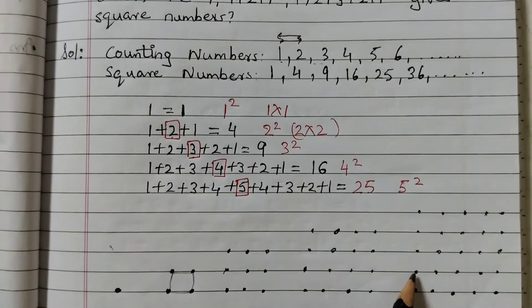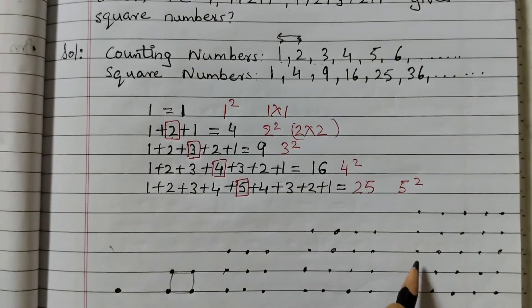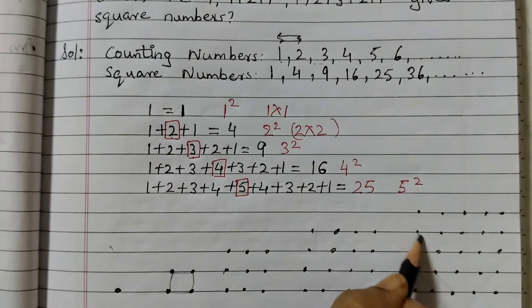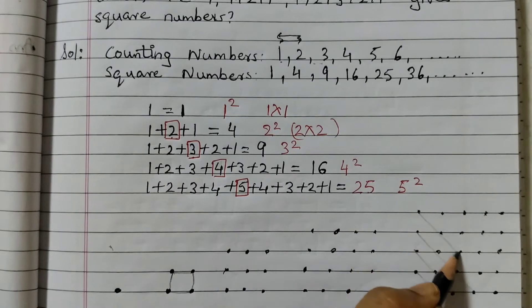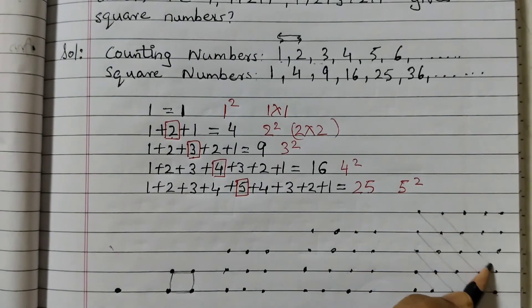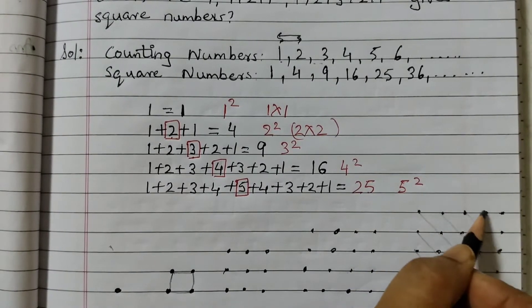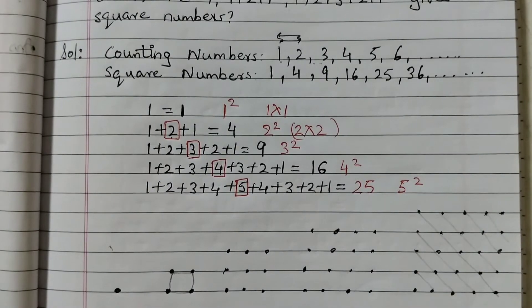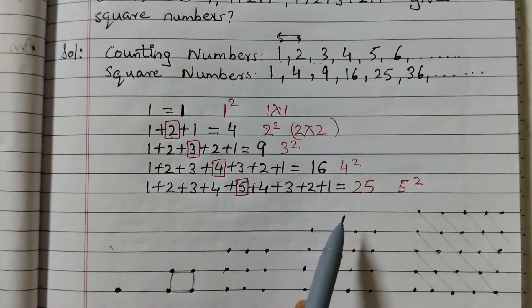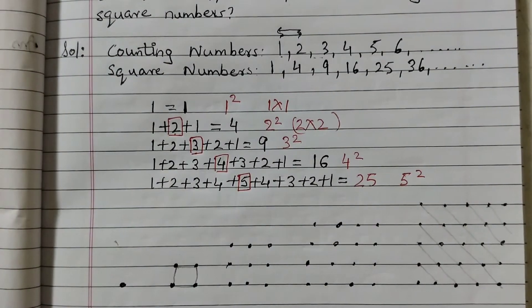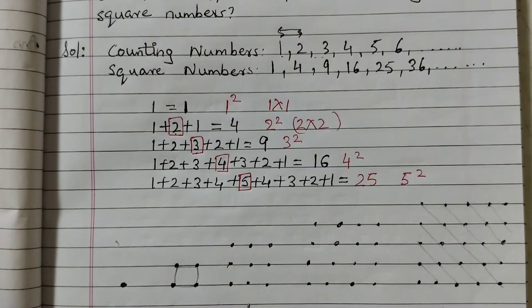So what we did? We did diagonal like this. This is 1, this is 2, this is 3, 4, 5, 4, 3, 2, 1. And always we take which is the diagonal, the square of that and that gives you the answer. This is how you need to find an explanation for adding counting numbers up and down and the square numbers.